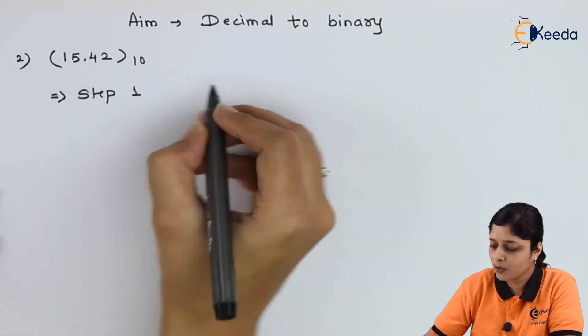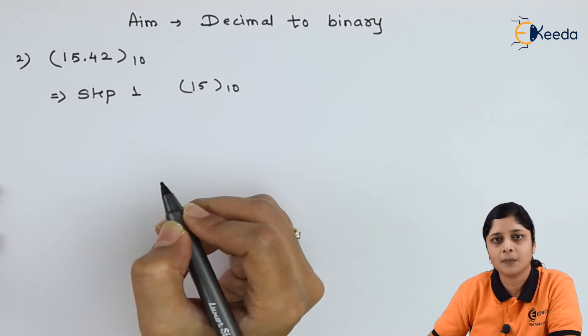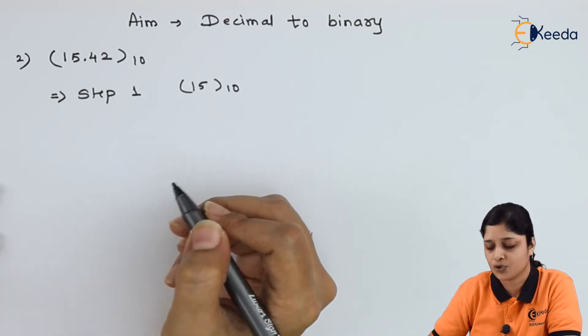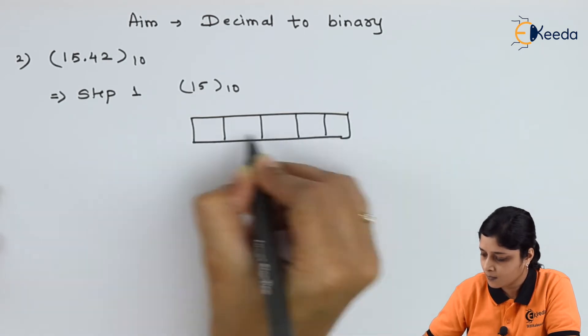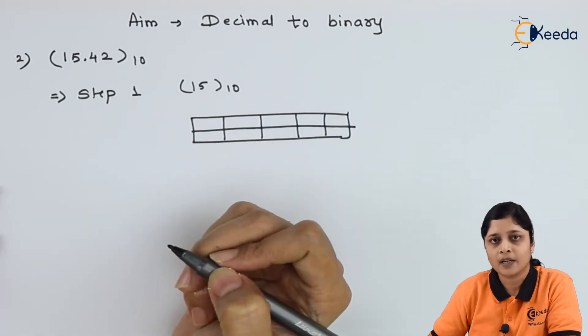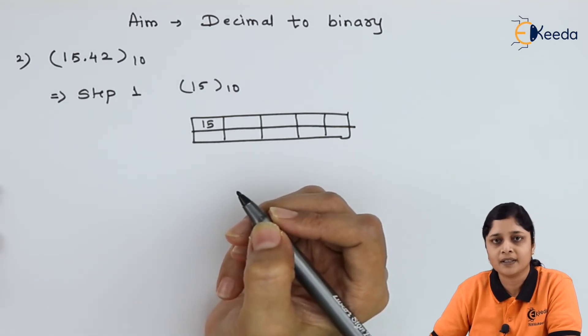Step 1: Take only 15 to the base 10 and solve it by successive division method approach. Write down 15. Convert it into binary. Divide by 2.